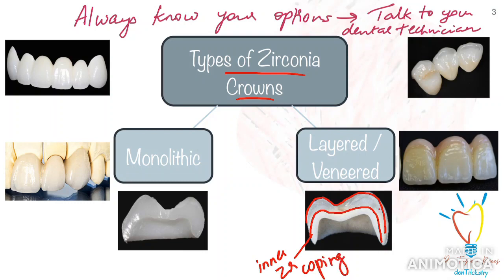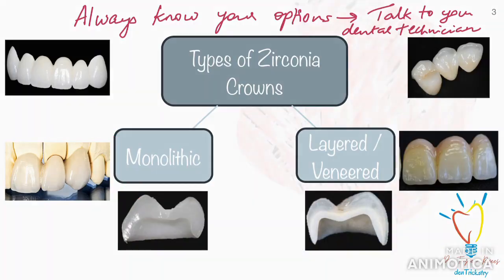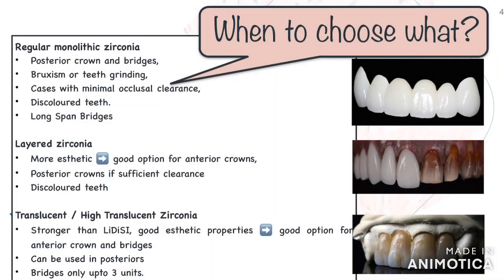Among the monolithic options, you have translucent and high-translucent zirconia. The clinical choice between one or the other depends on several factors including strength, aesthetics, and whether you are restoring the anterior or posterior segments. You can use the regular solid zirconia in the posterior teeth or in patients with bruxism or with minimal occlusal clearance because it has greater strength, but the aesthetic properties aren't so great.